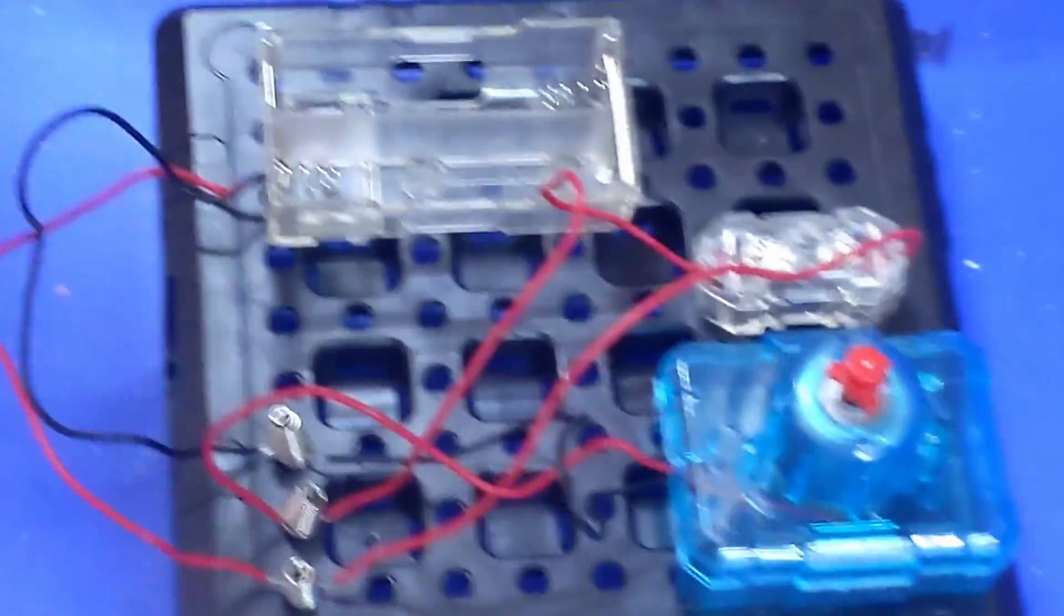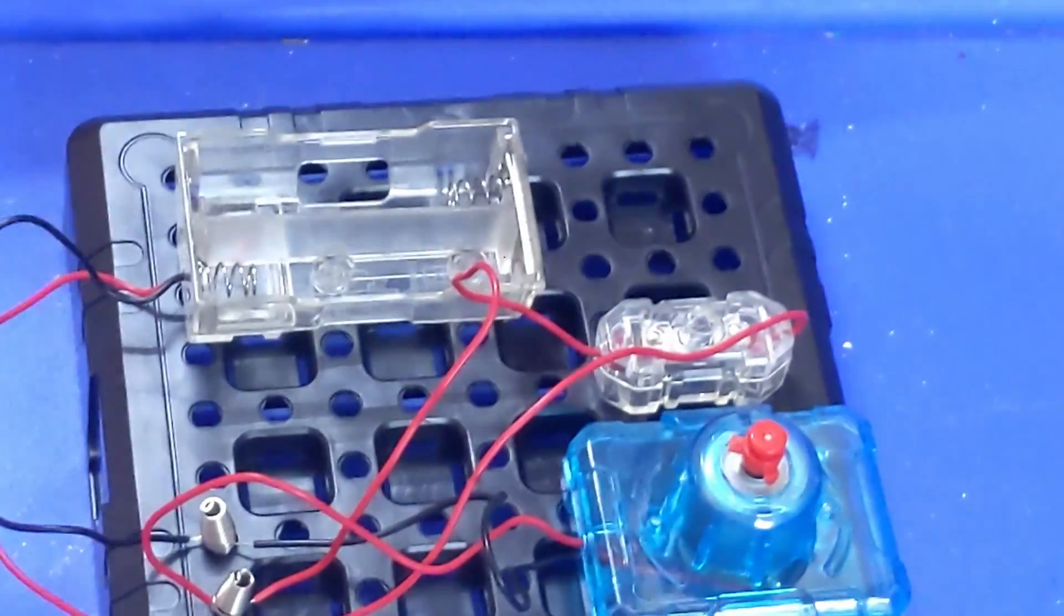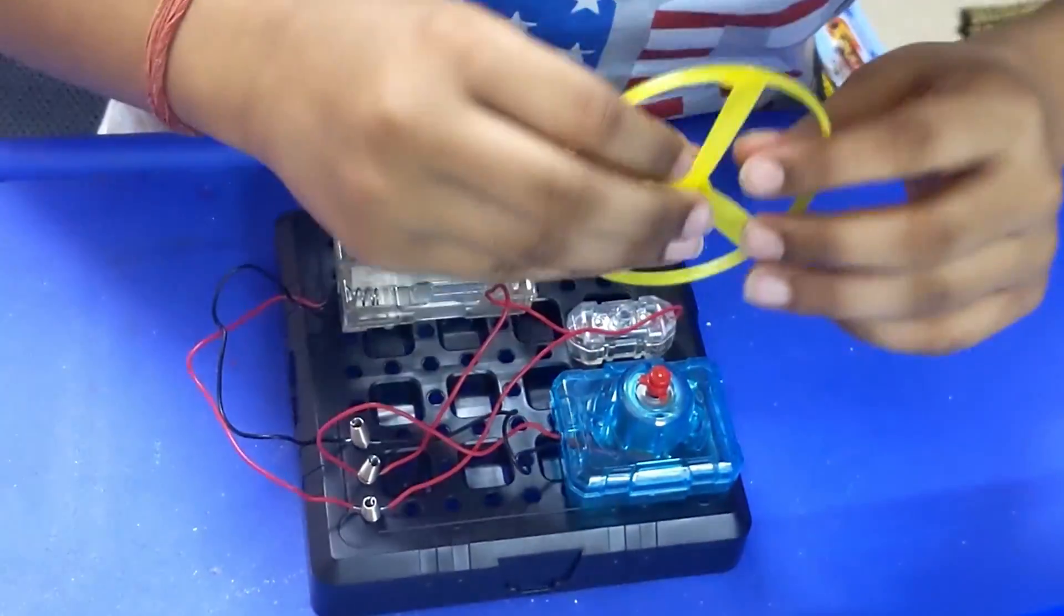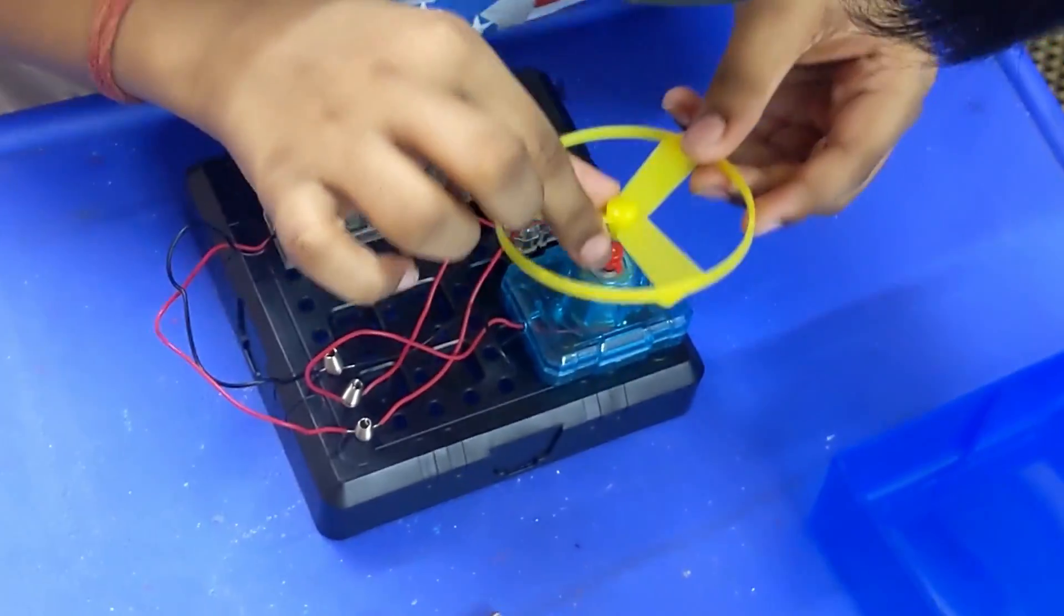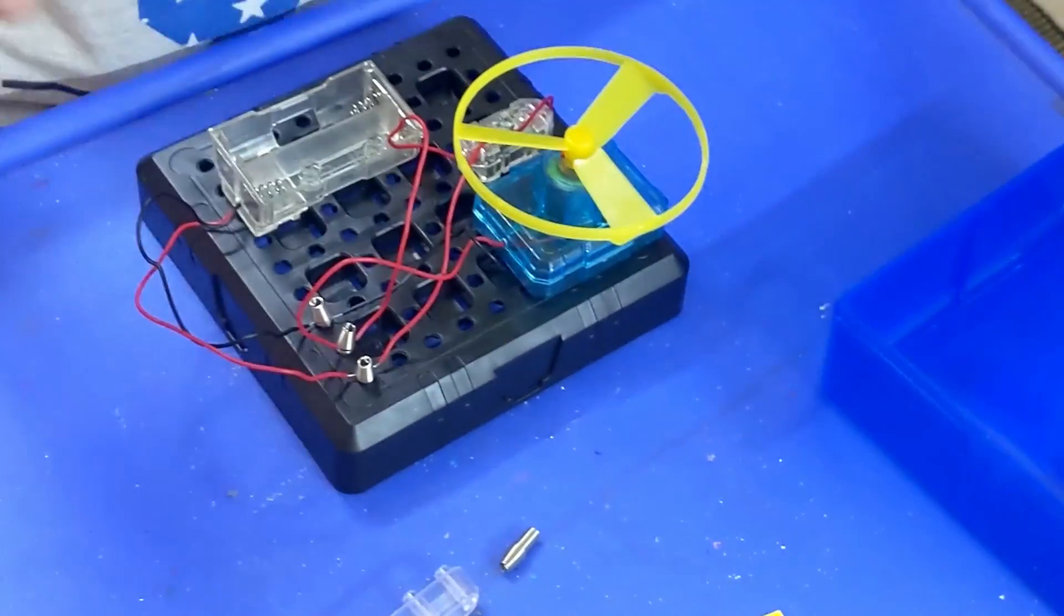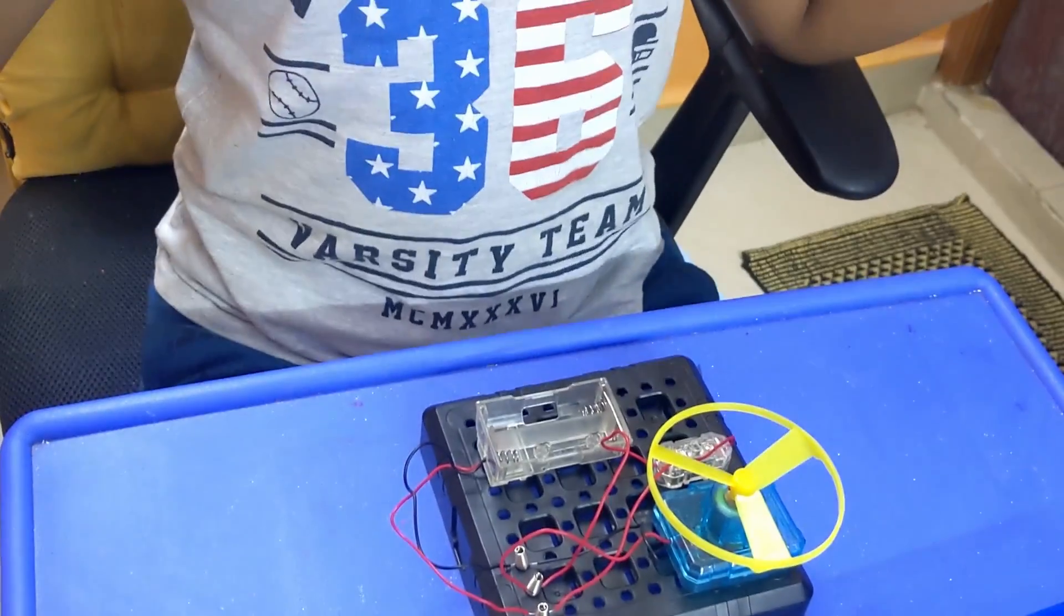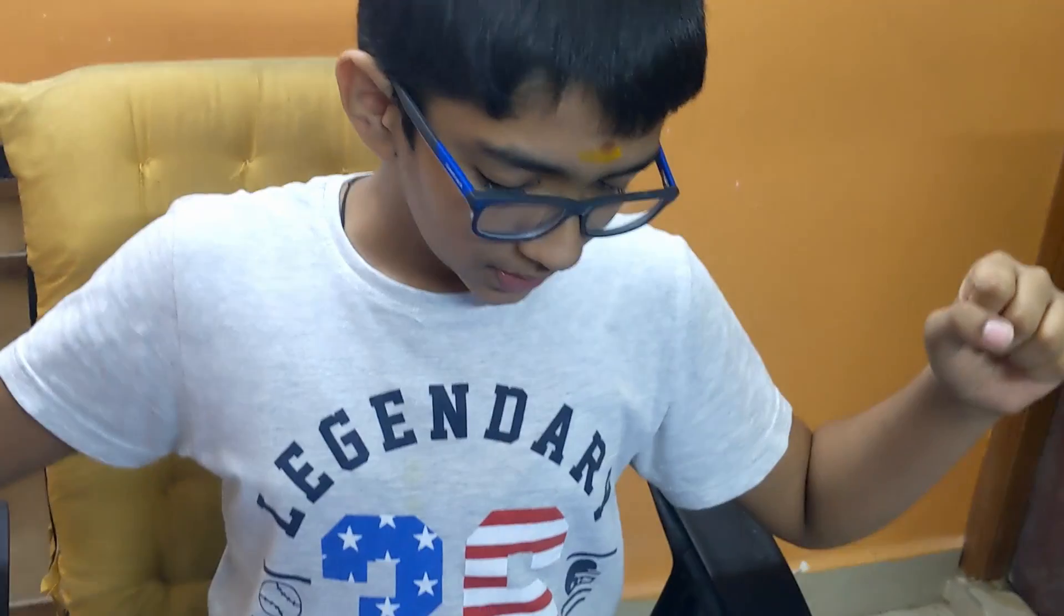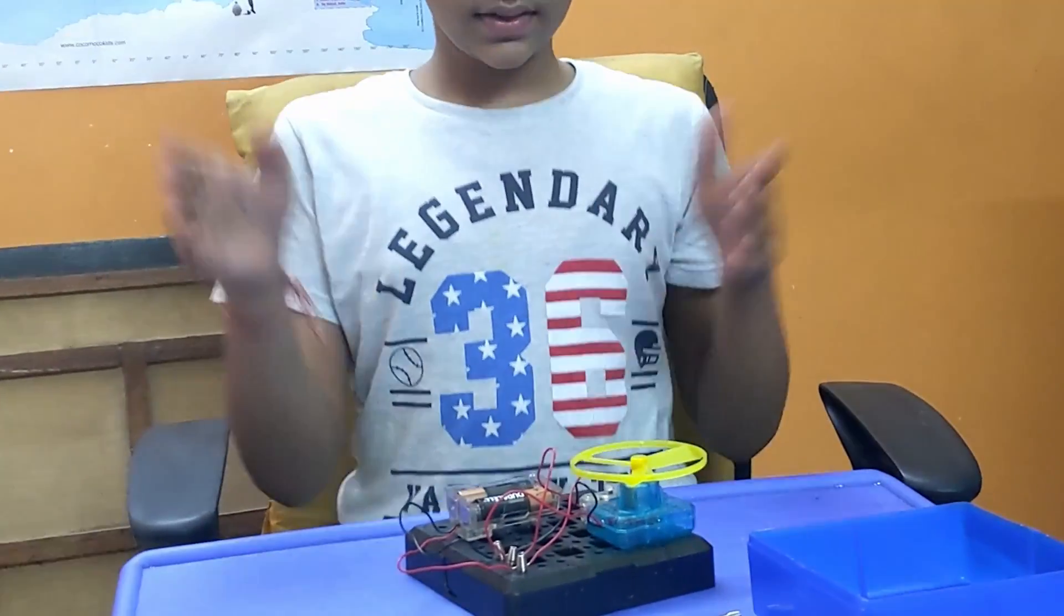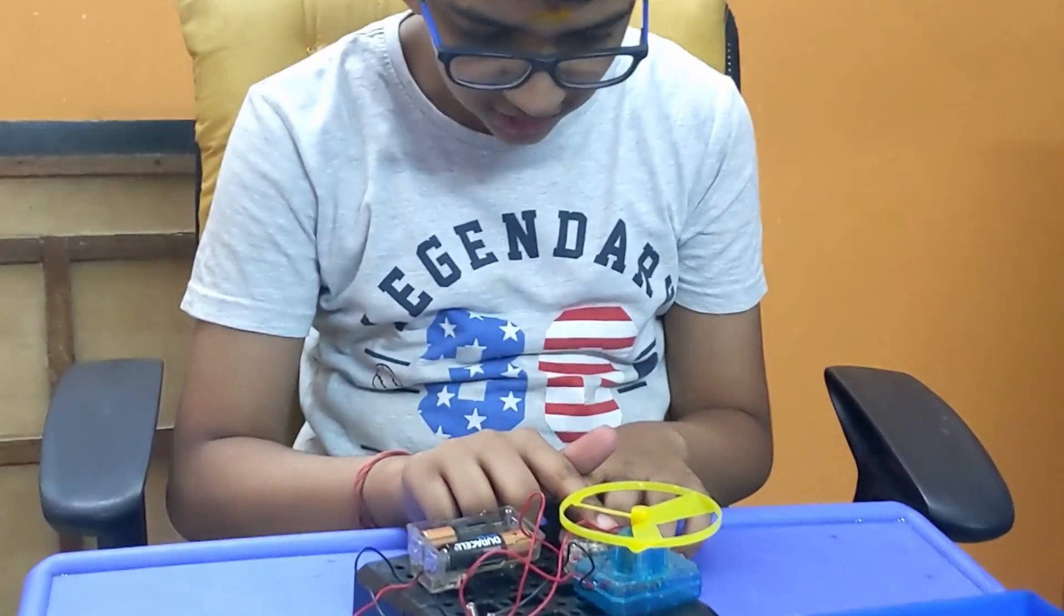So now, next step is to put this on this. Put the propeller on the motor. Done. Now we put in the batteries, so we can put in batteries and we can play. So let's go. And they are in there.